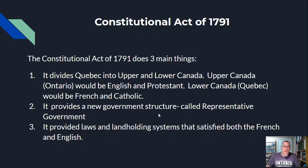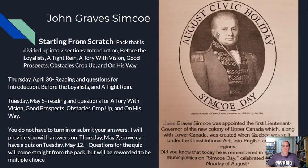Today we're going to take a look at the first governor of Upper Canada, and that is John Graves Simcoe. John Graves Simcoe was appointed the first lieutenant governor of the new colony of Upper Canada, which, along with Lower Canada, was created when Quebec was split under the Constitutional Act into English and French regions. John Graves Simcoe is taking control of the English region of Upper Canada.